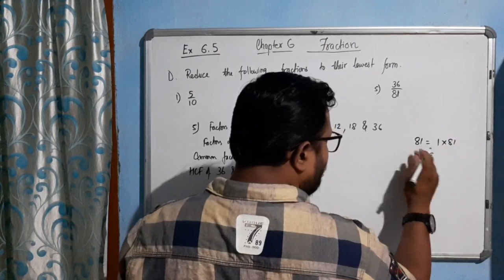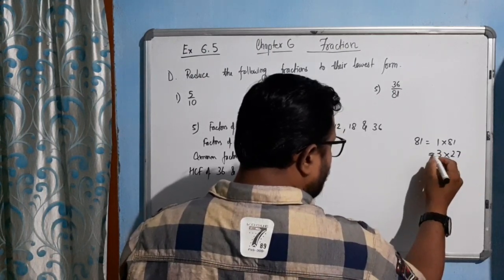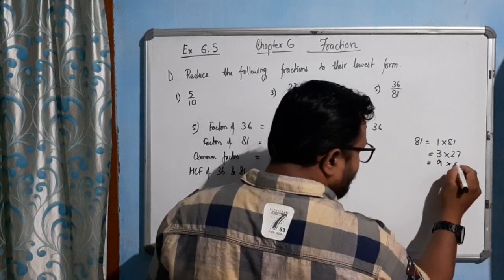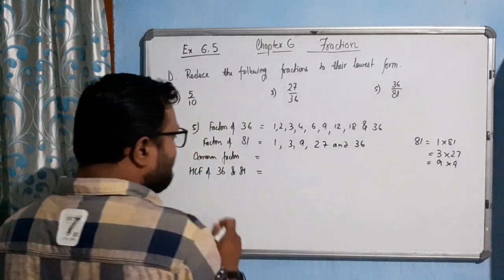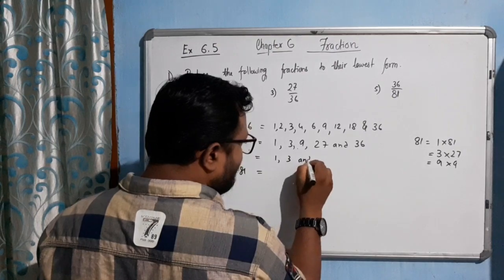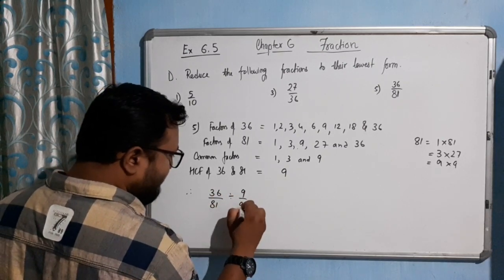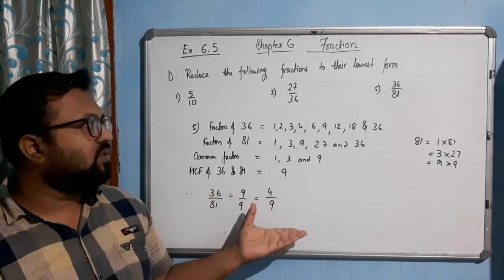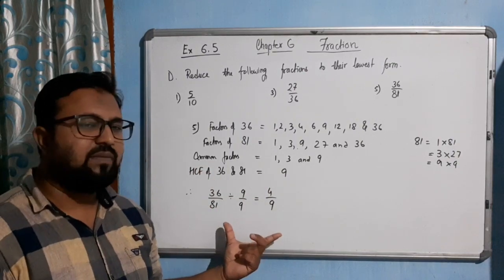For 81: 1 into 81, by 2 not possible, by 3 possible — 3 times 27 is 81, by 9 — 9 times 9 is 81. So the factors of 81 are 1, 3, 9, 27, and 81. Common factors of 36 and 81 are 1, 3, and 9, so the HCF is 9. Therefore 36 by 81 divided by 9 over 9 gives 4 by 9, which is the lowest form. Find the HCF and then solve — thank you.